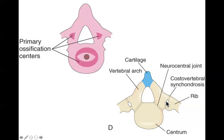The two halves of the posterior arch fuse during the first three to six years after birth, and the neurocentral joint usually fuses around age six. The reason this happens early in life is because after that, the spinal cord doesn't really get any bigger — it doesn't really even get any longer. The bones will get longer; the spinal column will get a lot longer. By the time you're an adult, your spinal cord only goes down to about L1. The spinal cord doesn't grow much after age six — just the bones get a lot longer.